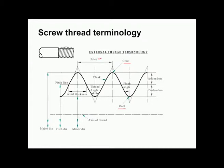The pitch line bisects the thread such that the thread material space is equal to the air space. This line is called the pitch line, and the diameter measured at this line is the pitch diameter. The distance between the pitch line and the crest point is known as addendum, and the distance between the root and the pitch line is called dedendum.